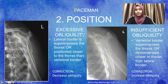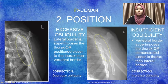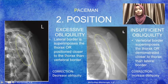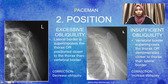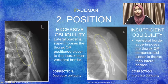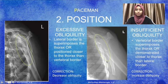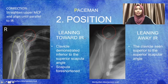For excessive obliquity, the criteria is that the lateral border superimposes the thorax, or is positioned closer to the thorax than the vertebral border — to correct it, decrease the obliquity. For insufficient obliquity, the vertebral border superimposes the thorax or is demonstrated closer to the thorax than the lateral border — this is the vertebral border and this is the lateral border — so to correct it, increase the obliquity.